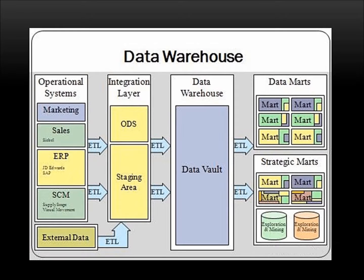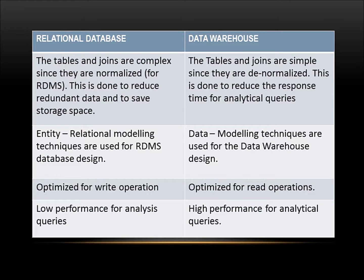Specific sections ask different questions — therefore, data marts are created. These are smaller data warehouses which allow faster responses. In a relational database, the tables and joins are complex since they are normalized, which is done to reduce redundant data and save storage space. Whereas in a data warehouse, the tables and joins are simple since they are denormalized, which is done to reduce the response time for analytical queries.